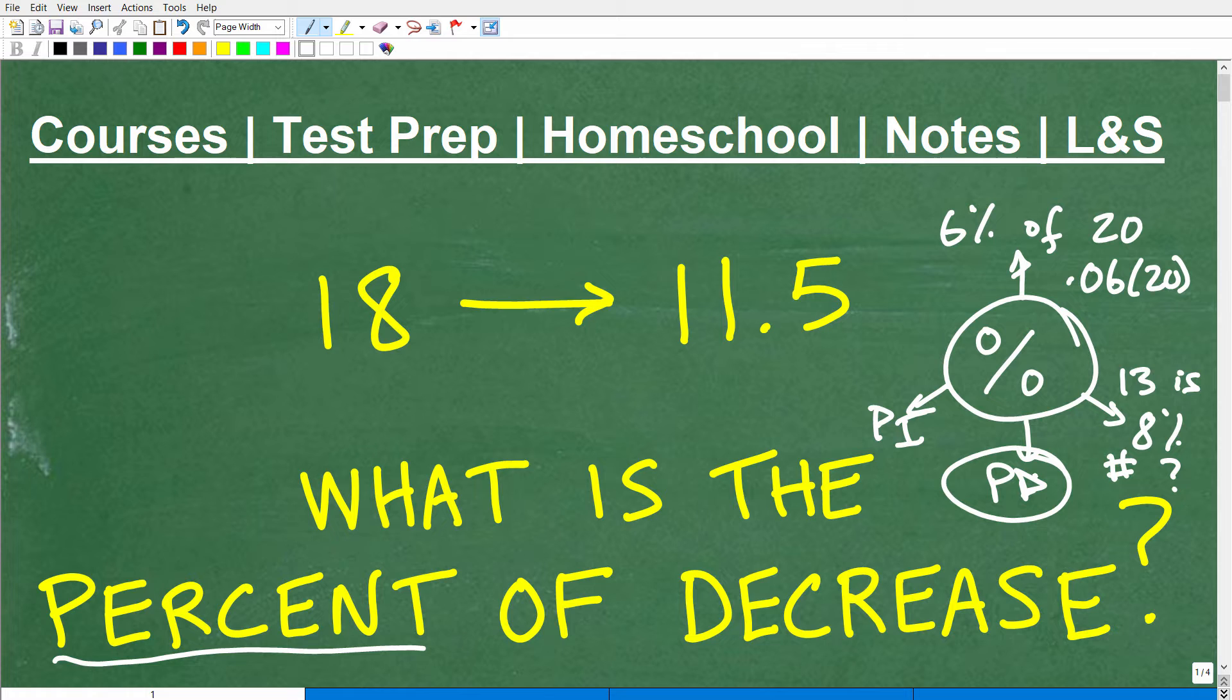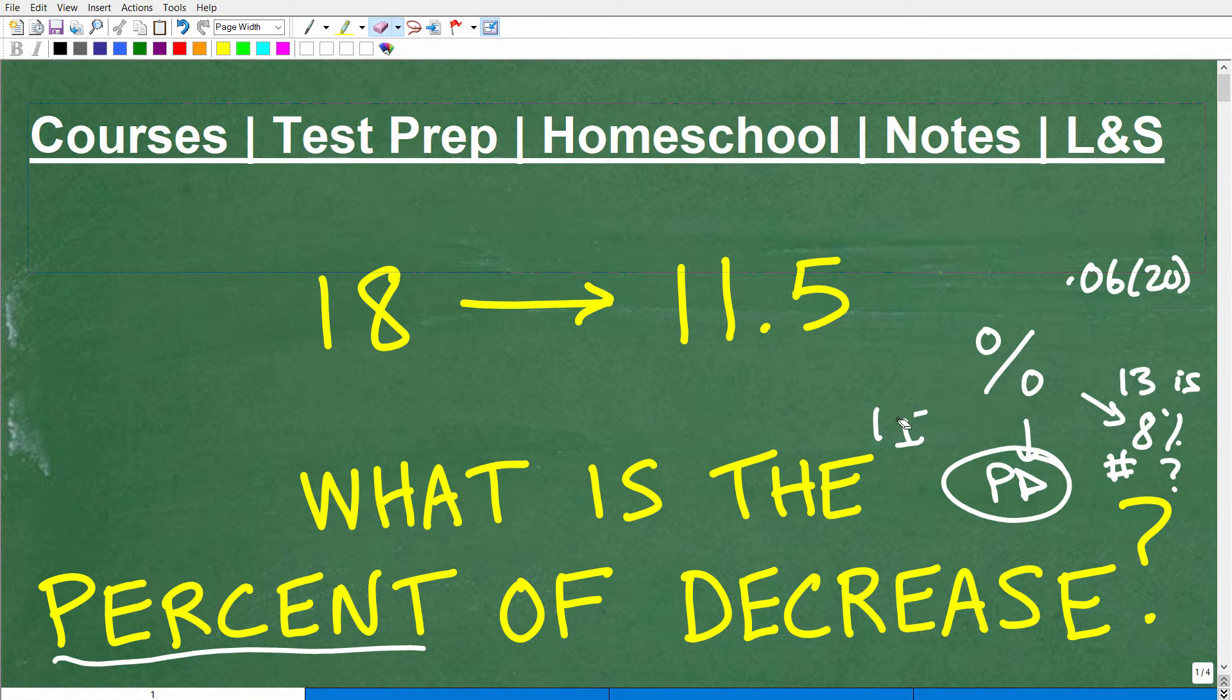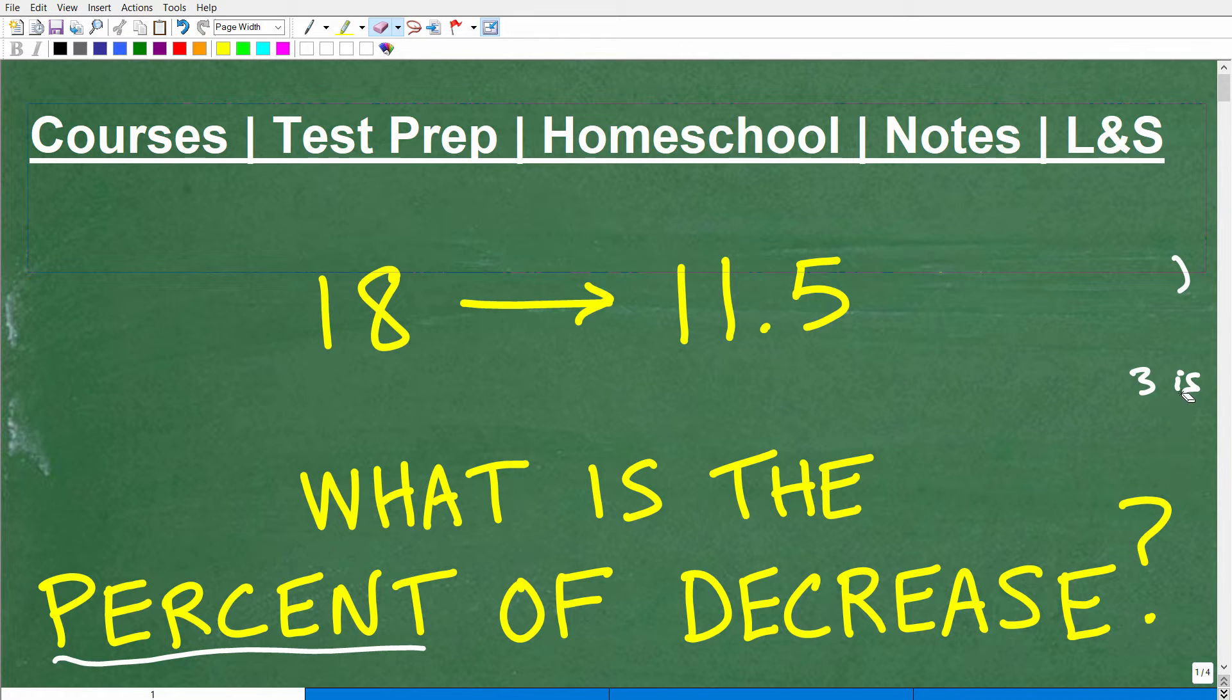And when, in terms of the topic of percent, we have other types of problems like percent of increase and percent of decrease. And in this particular problem we're going to be talking about the percent of decrease. So let's take a look at a situation like we have 18 and then this value dropped down to 11.5. We want to calculate here, what is the percent of decrease if we had 18 and it dropped down to 11.5? Now if you know how to do this, go ahead and pause the video, put your answer into the comment section.